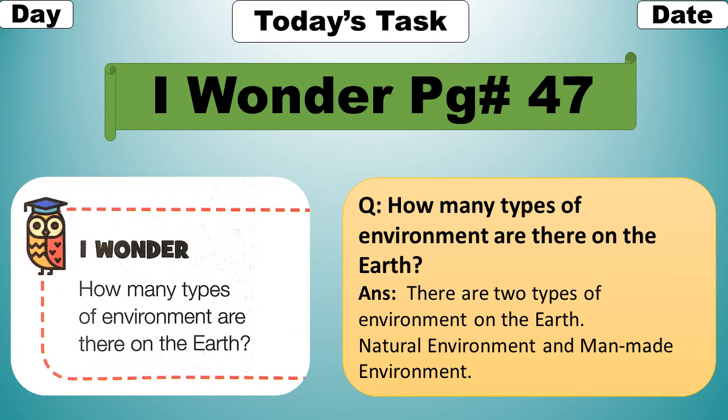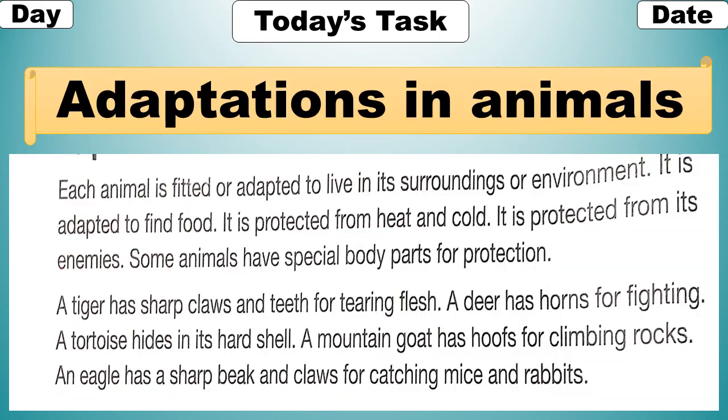I wonder: how many types of environment are there on the earth? There are two types of environment on the earth — natural environment and man-made environment. Each animal is fitted or adapted to live in its surroundings or environment.